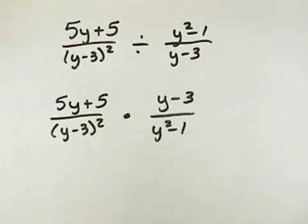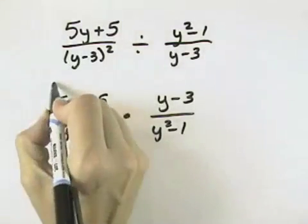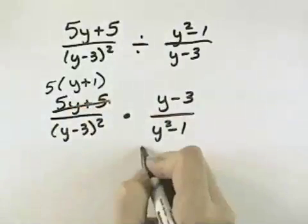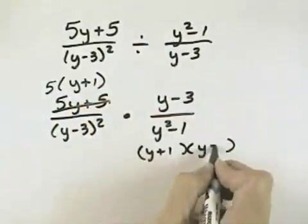Now before we do the multiplication, we want to see if there are any common factors to cancel. So that means we'll factor this numerator by taking out the greatest common factor of 5. We'll factor this denominator because it's the difference of squares, so we can factor it into the sum and difference of the square roots.